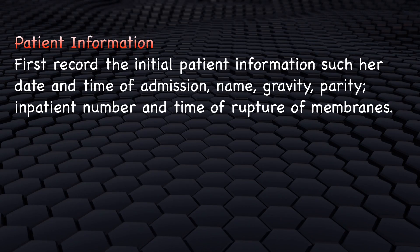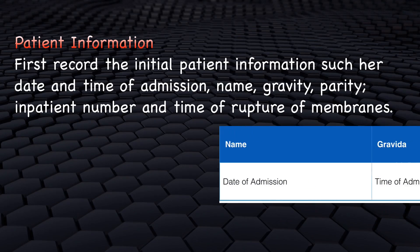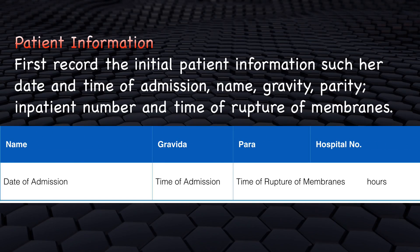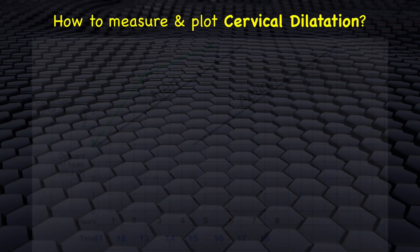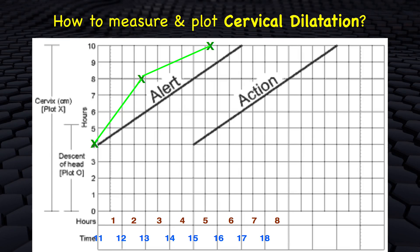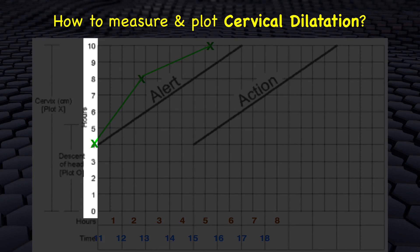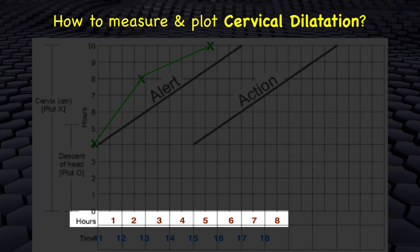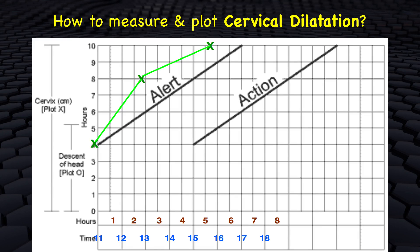First, record the initial patient information such as her date and time of admission, name, gravida, parity, inpatient or hospital number, and the time of rupture of membranes. For cervical dilatation: vaginal examination is done at admission and then every 4 hours, and the findings are plotted in the appropriate square. The main part of the partograph is the graph in the center. Numbers 1 to 10 on the left represent centimeters of dilatation; along the bottom, numbers 0 to 24 represent hours, each square representing 1 hour. The dilatation of the cervix is plotted with a small X.